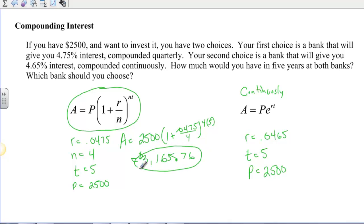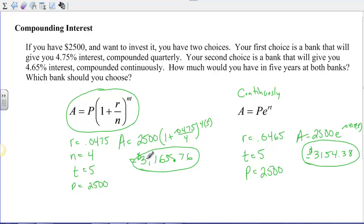I get $3,165.76. So that's not bad. Over here, I'm going to plug it in. I'm going to say A equals 2,500E to the .0465 times 5. And I get $3,154.38. And so you can see that our best offer is to go with the first bank offering us quarterly interest. Just because the interest rate is a little bit higher, it's going to give us a little bit better return. If the interest rates were exactly the same, the continuous bank would give us more return.